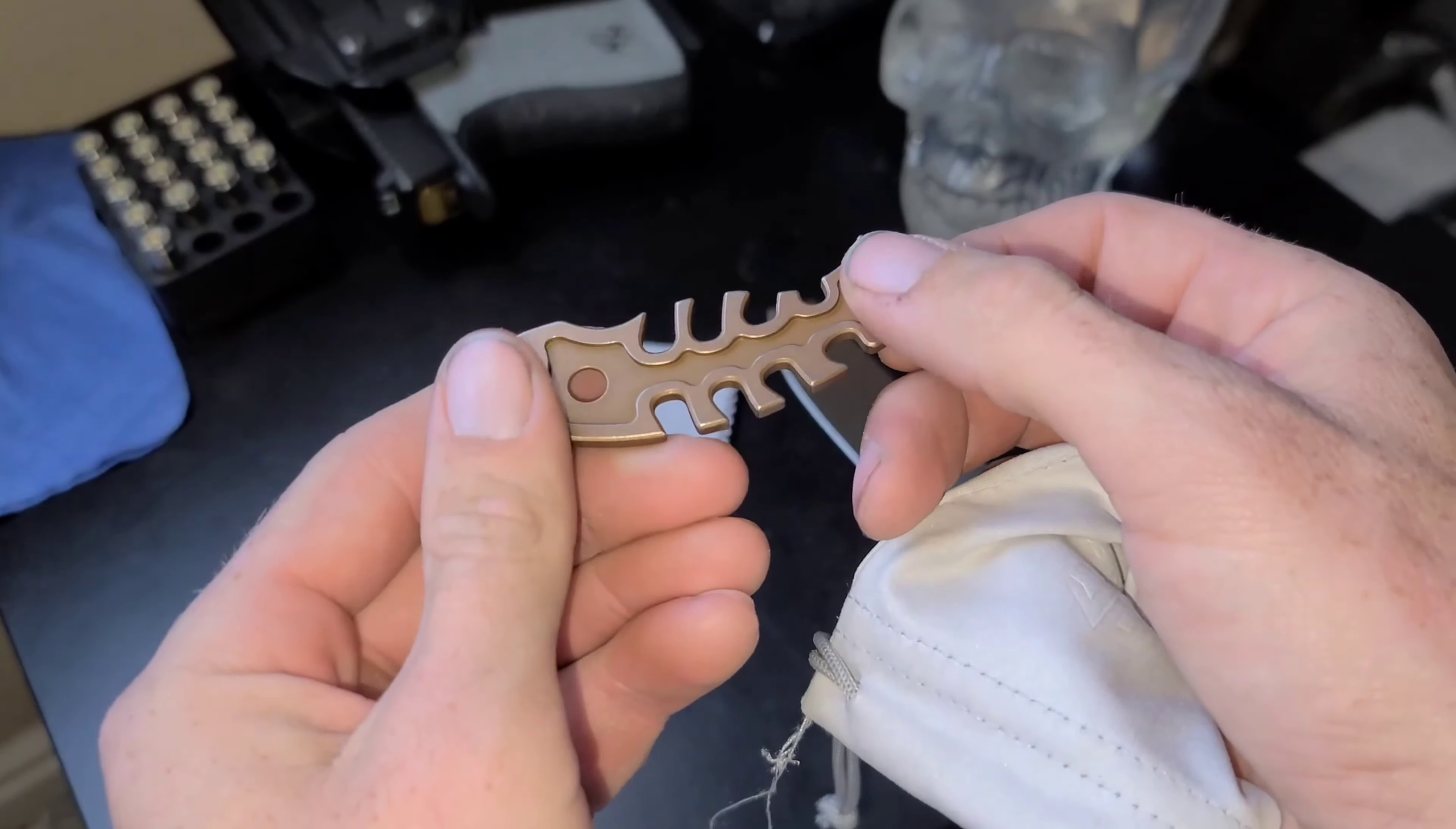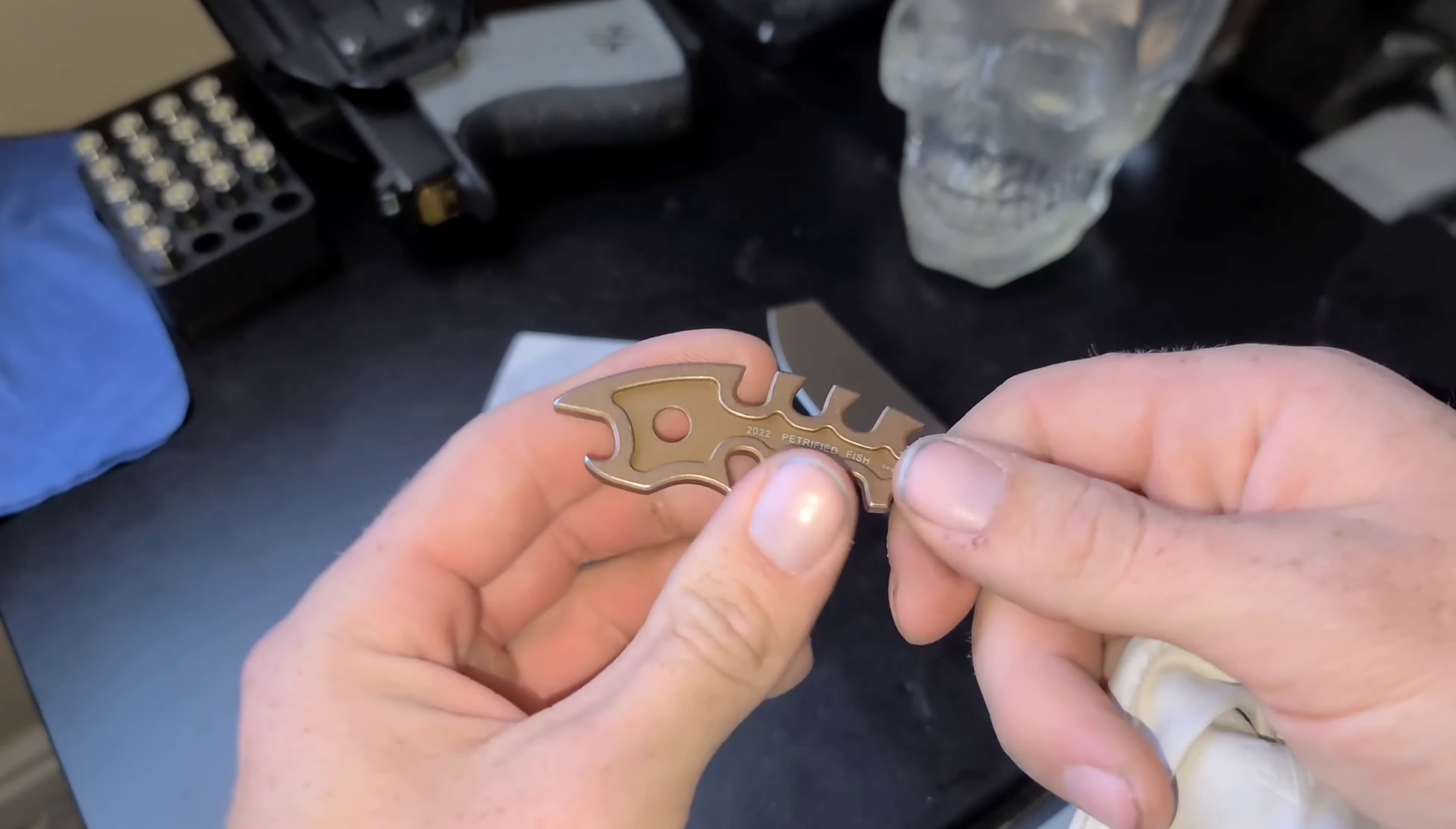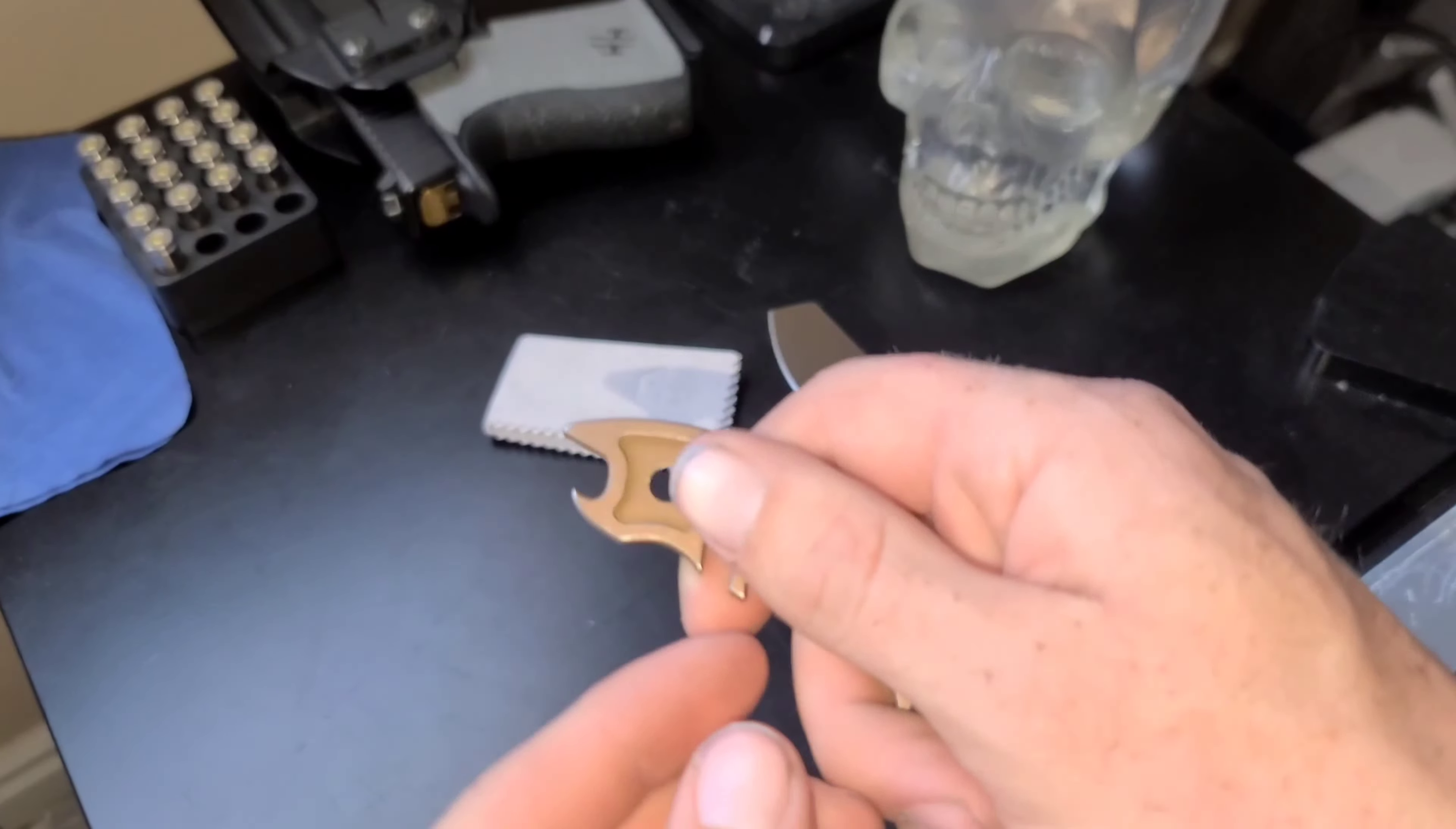Slash paracord holder. Super cool actually. Obviously it has a bottle opener here. It says Petrified Fish on there.